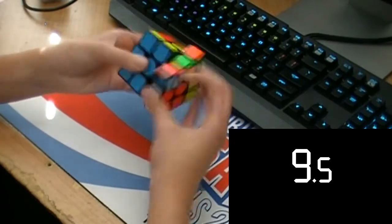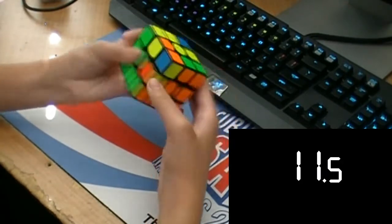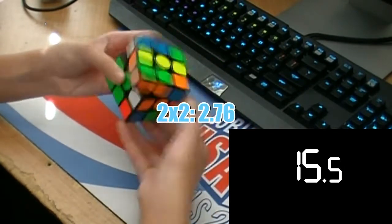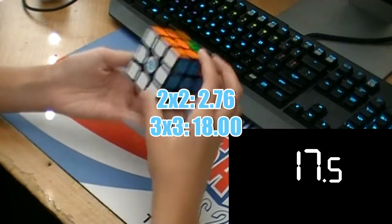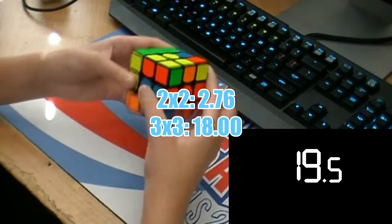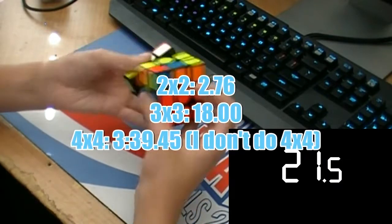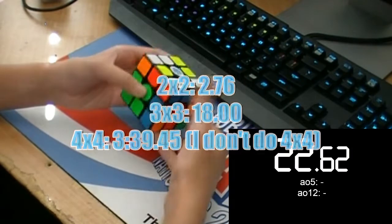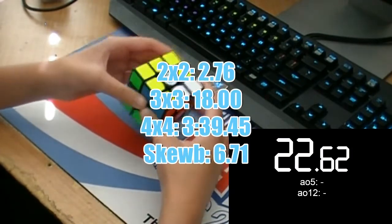Anyways, I'm going to mention some of my cubing PBs so that when I look back on this video, I can see what has changed. For 2x2, I got a 2.76. For 3x3, I got an 18 exactly. For 4x4, I got a 3 minute, 39 second, .45 second solve. For Skewb, I got a 6.71.